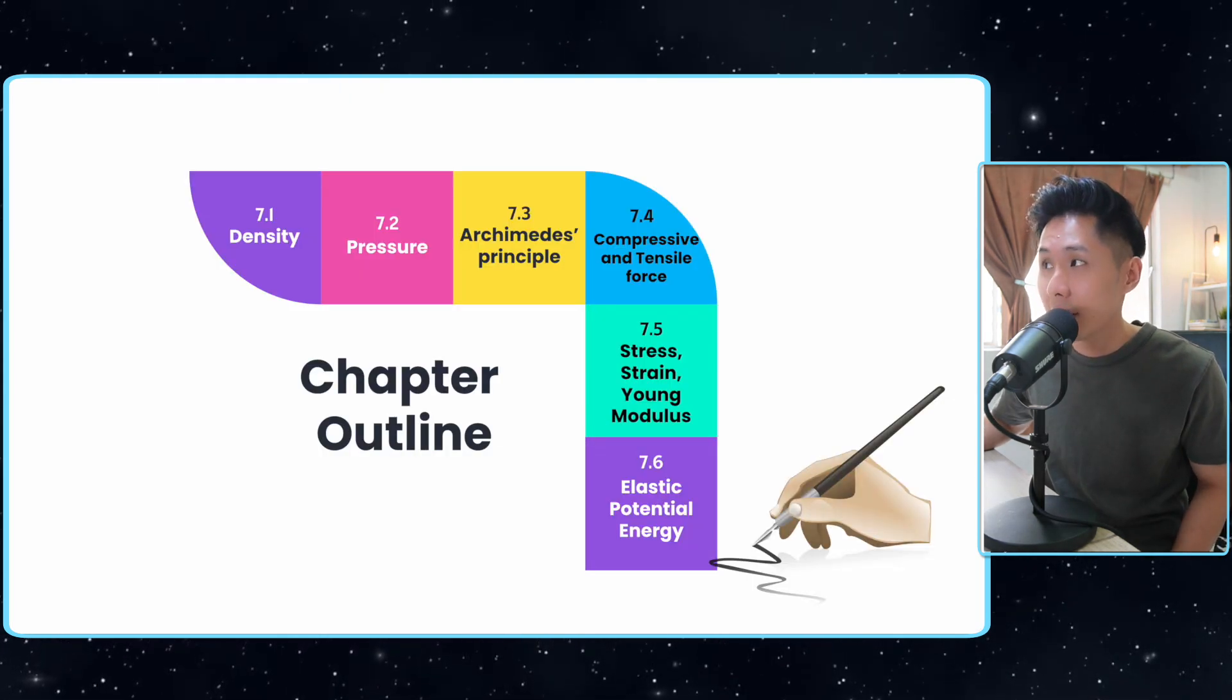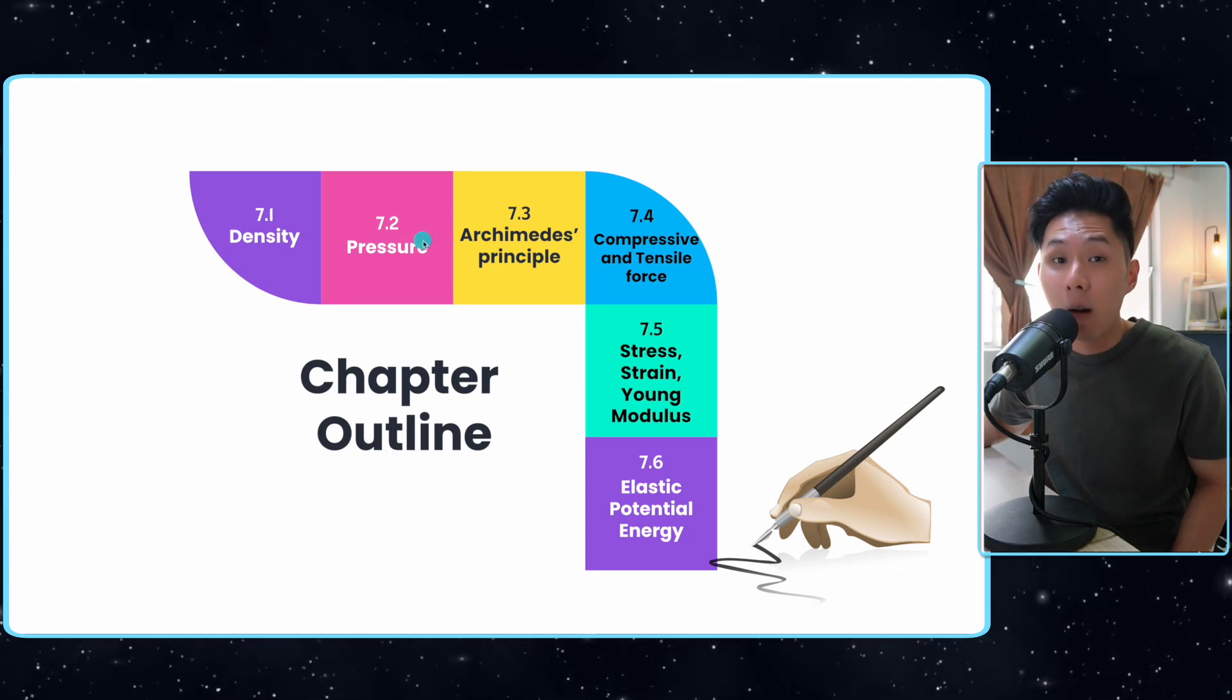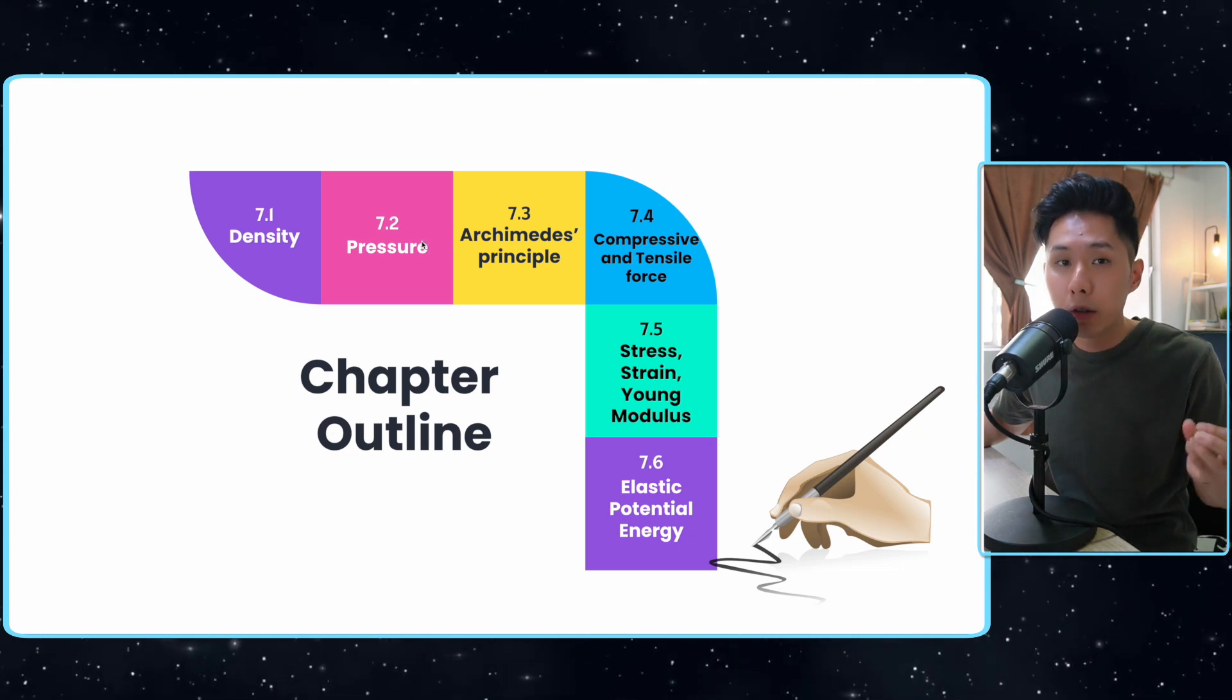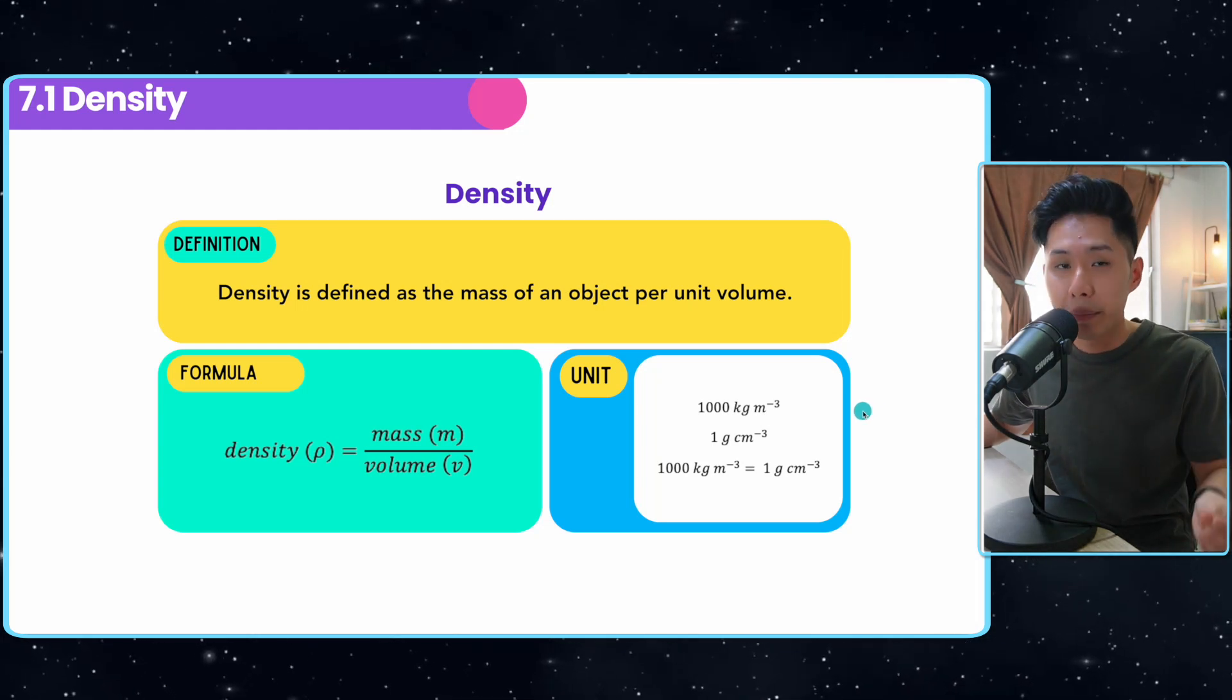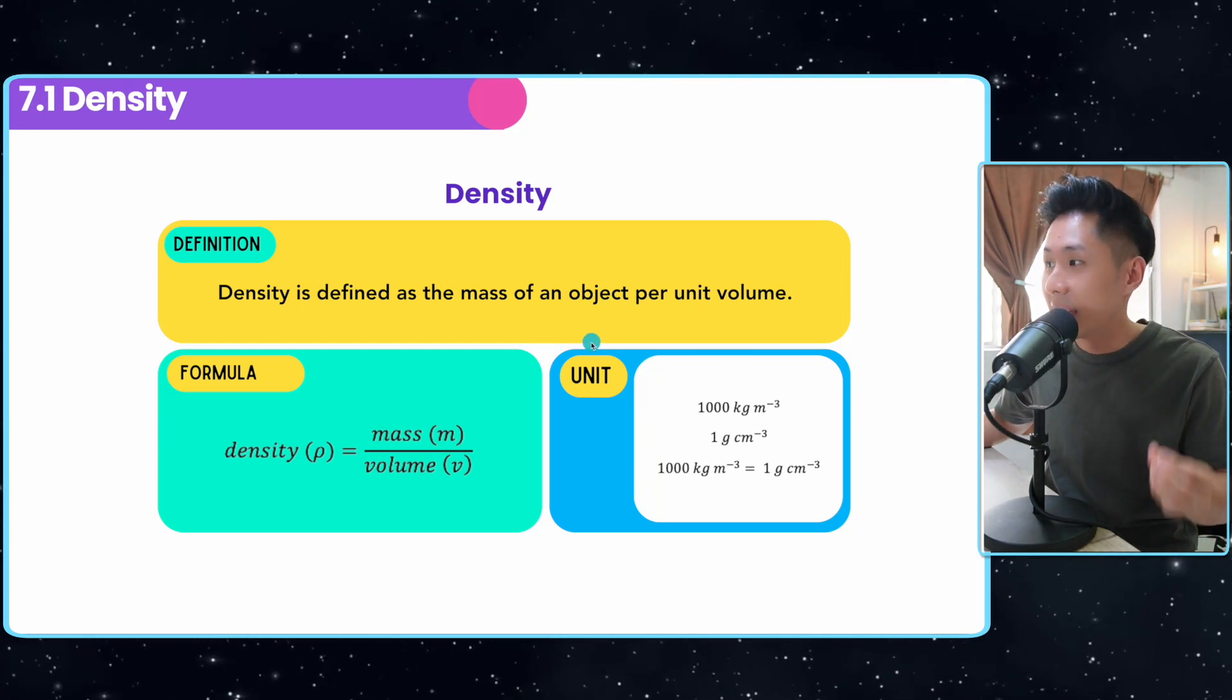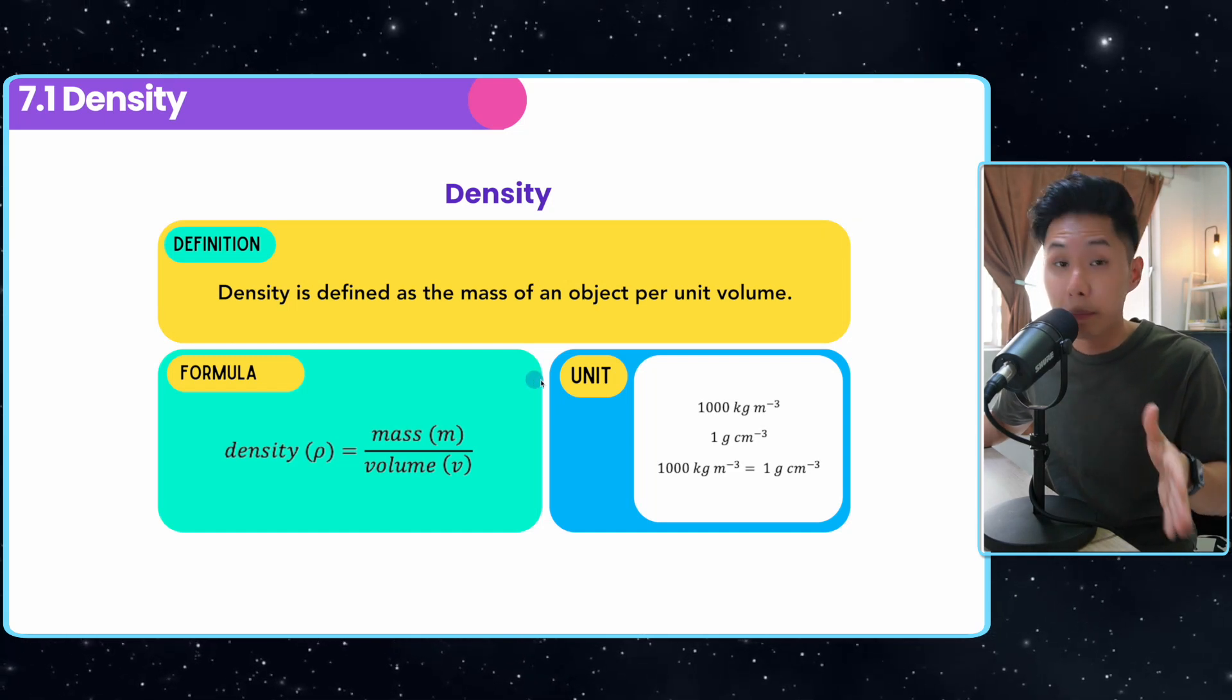This is the chapter outline here. I want to specify that all these different terminologies are all related to each other. Hopefully by the end of the video, you will see the big picture of this chapter. Now let's look into density, the easiest chapter of the day. Its formula is mass divided by volume. It basically measures how closely packed atoms are arranged in the matter.